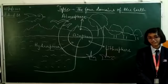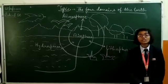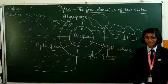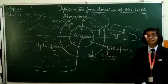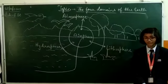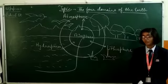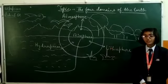plateaus, plains, valleys, etc. The uppermost layer of the lithosphere is known as the crust. The layer below the crust is known as the mantle. The mantle is divided into two parts: upper mantle and lower mantle.